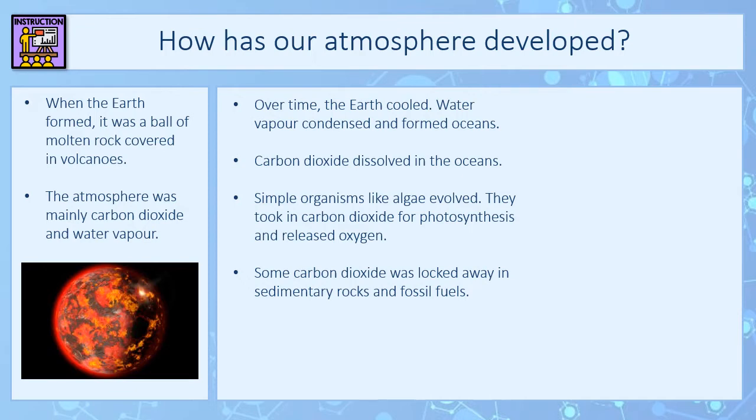That glucose became part of the plant, and when those plants were eaten by animals or other living things it was locked away into their shells and skeletons. When the plants or animals died they were compressed and formed fossil fuels. So some of the carbon dioxide originally taken in by those plants got locked away in the formation of sedimentary rocks from shells and skeletons, and also into fossil fuels.